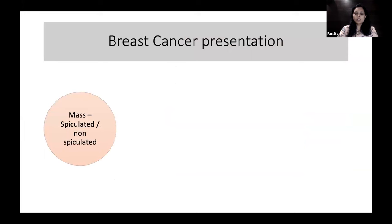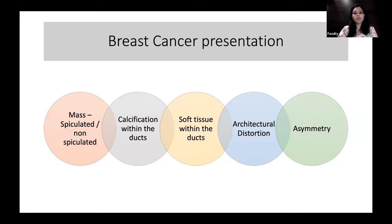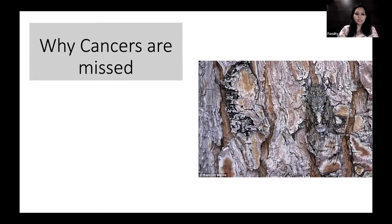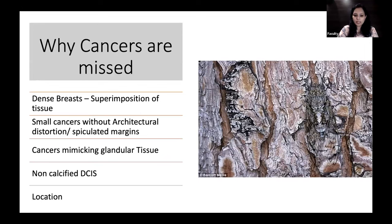Breast cancer can present as a mass — speculated or non-speculated — with calcifications within the ducts, non-calcified DCIS as soft tissue within the duct, malignancy presenting as isolated architectural distortion, or even subtle asymmetries. Cancers are missed in dense breasts because of superimposition of tissue, and small cancers without architectural distortion or speculated margins can mimic glandular tissue — for example, lobular carcinomas and non-calcified DCIS.